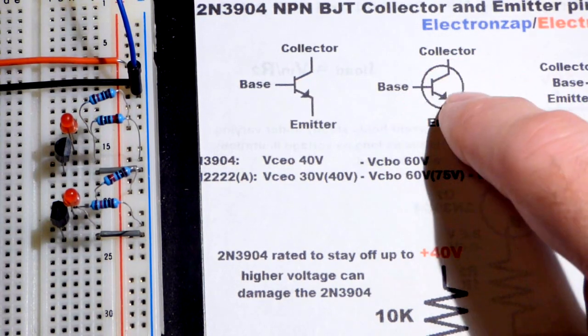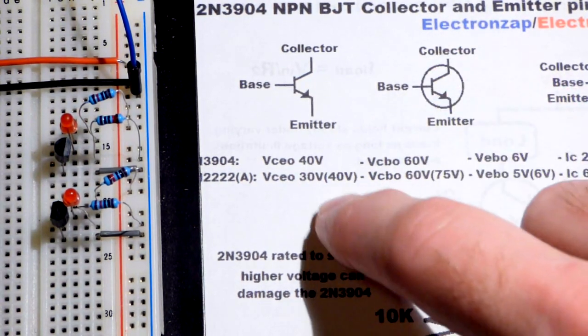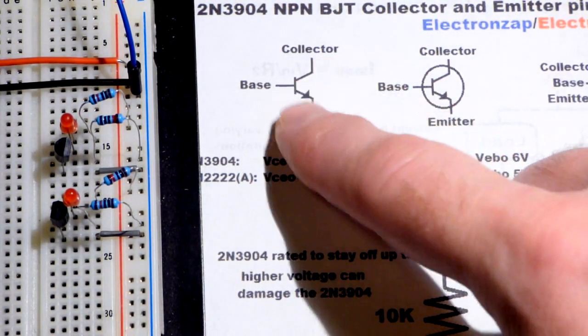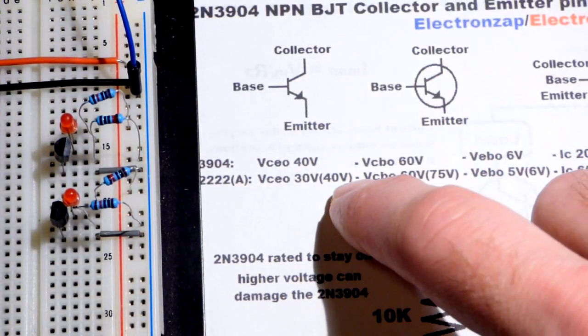So sometimes the schematic symbol will have a circle. I always put a circle there. I think it makes it easier to keep track of the components, but it may not be circled.